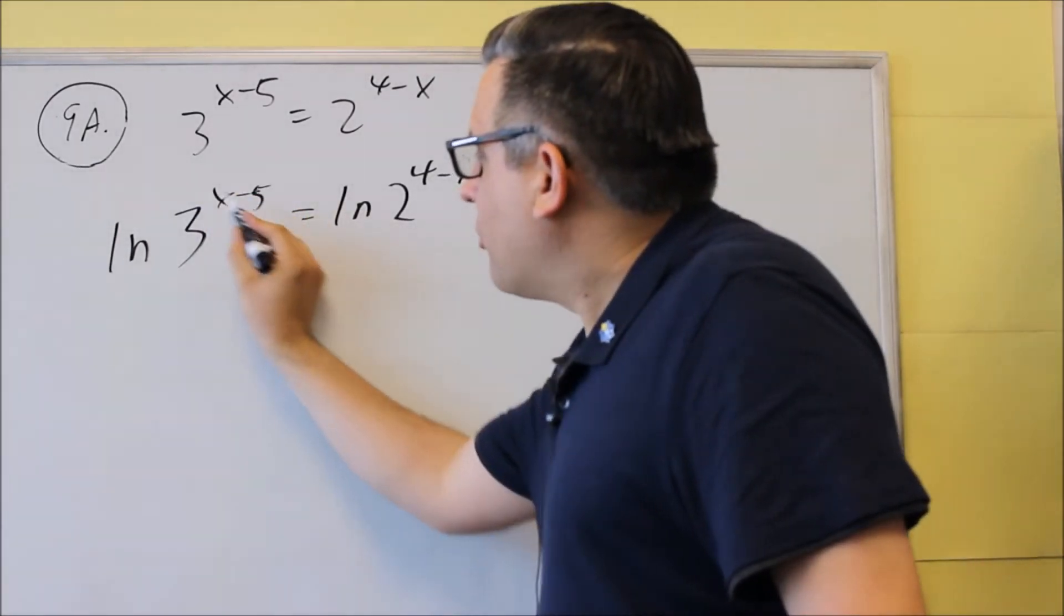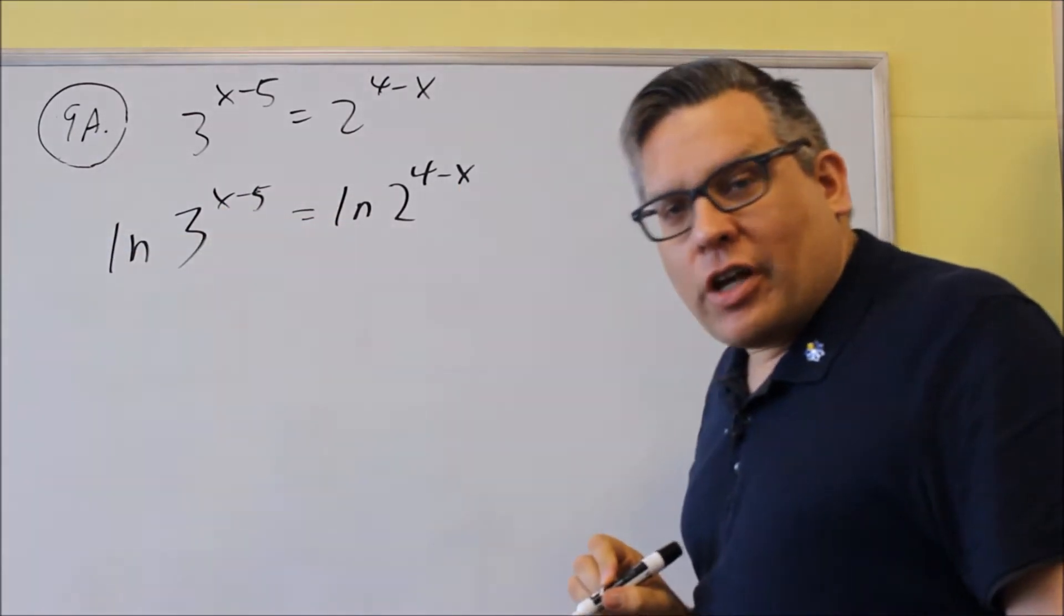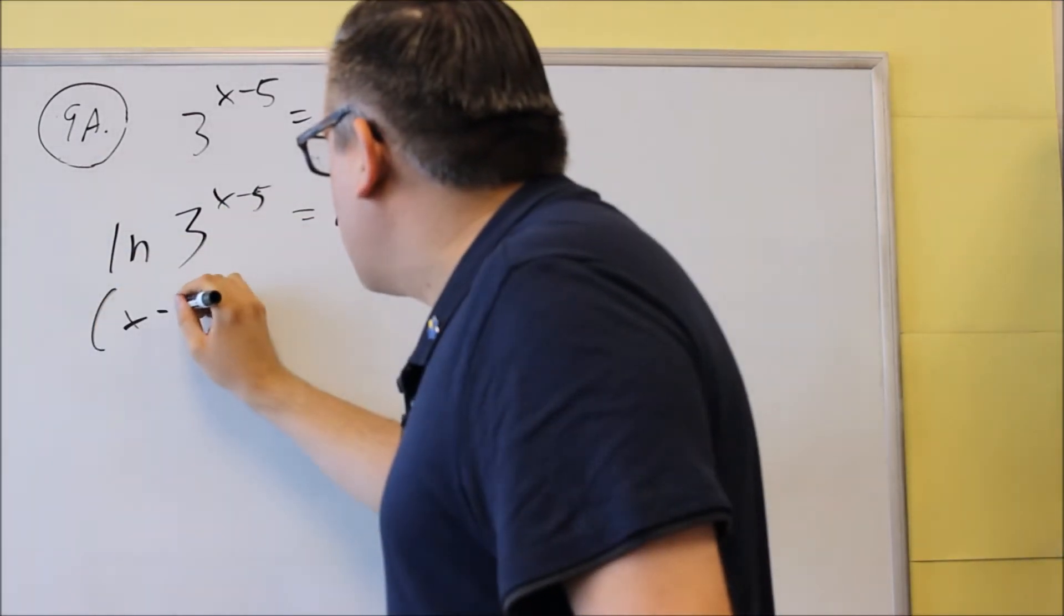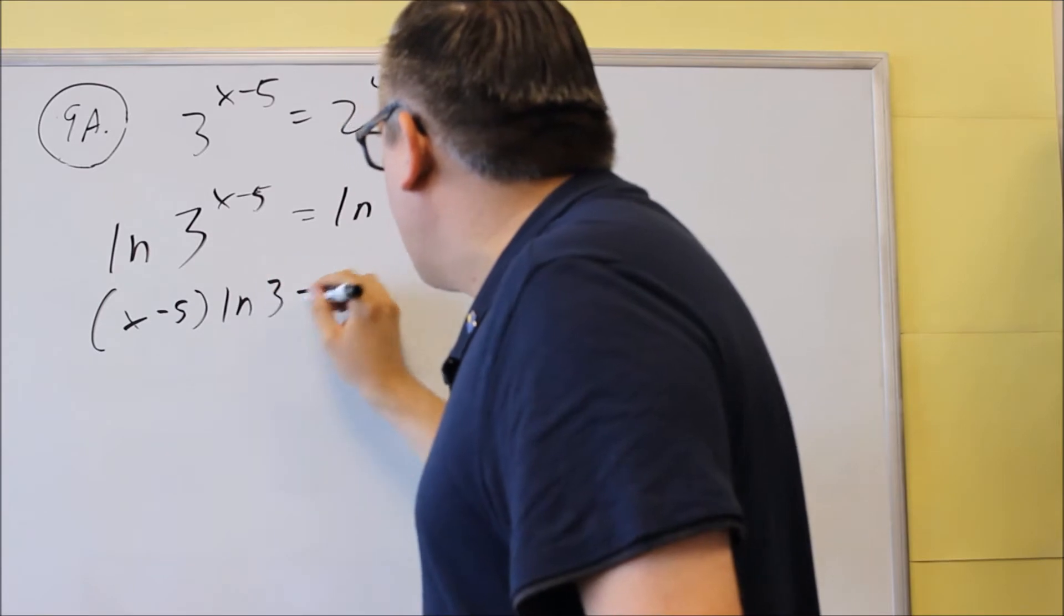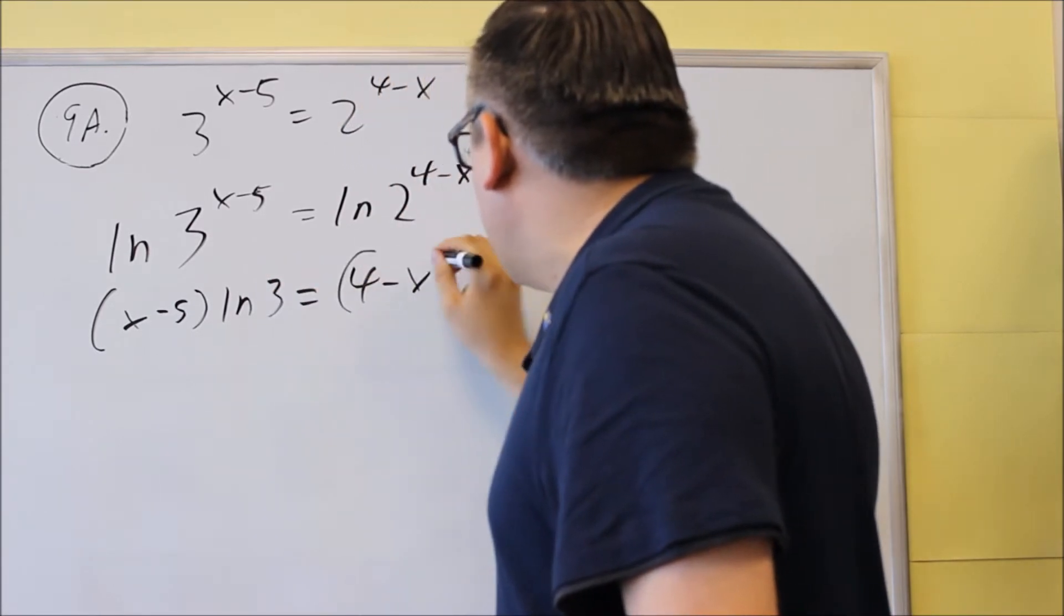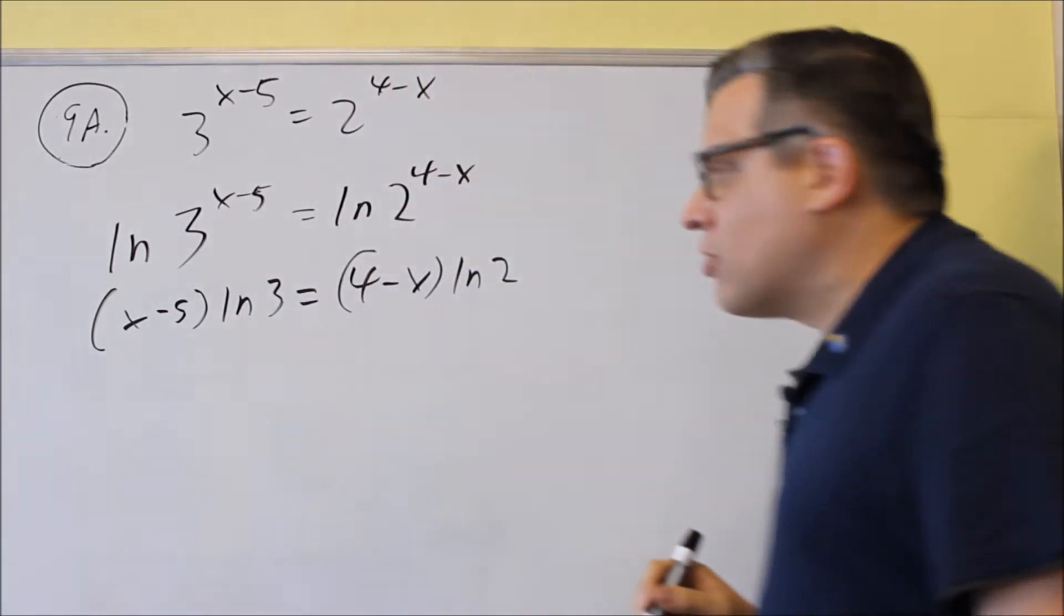X minus 5, we're going to bring that whole thing down in front of the natural log of 3. So (x - 5) ln 3 will equal (4 - x). Bring that down in front of the natural log of 2.